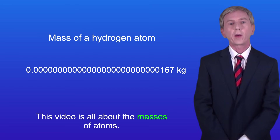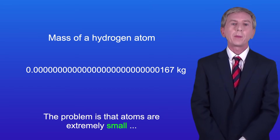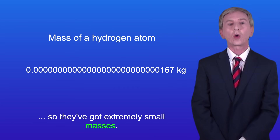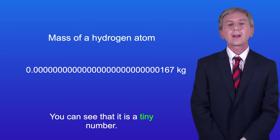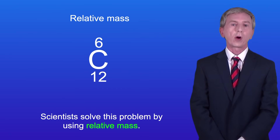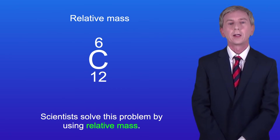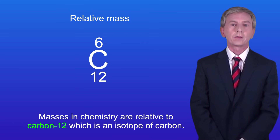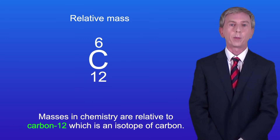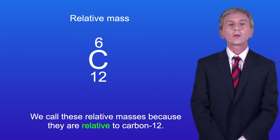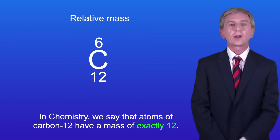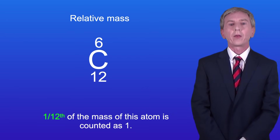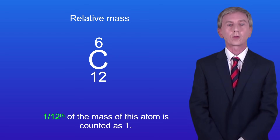This video is all about the masses of atoms. The problem is that atoms are extremely small so they've got extremely small masses. Here's the mass of one atom of hydrogen and you can see that it's a tiny number. Scientists solved this problem by using relative mass. Masses in chemistry are relative to carbon-12, which is an isotope of carbon. We call these relative masses because they're relative to carbon-12. In chemistry we say that atoms of carbon-12 have a mass of exactly 12, and then one twelfth of the mass of this atom is counted as one.